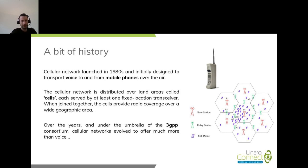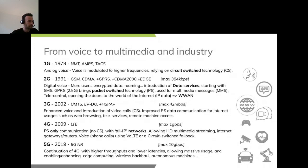Over the years, and under the umbrella of the 3GPP consortium, cellular networks, or mobile networks, evolved to offer much more than the usual voice. Here is a brief summary of the different cellular versions and the cellular network evolution. Starting with 1G, it was mainly about transporting analog voice.